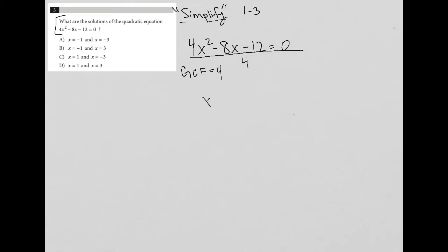What I end up with is x squared minus 2x minus 3 equals 0. And then from there, I have some options.